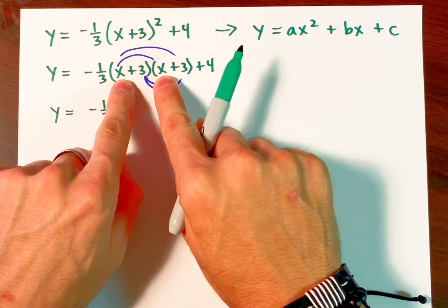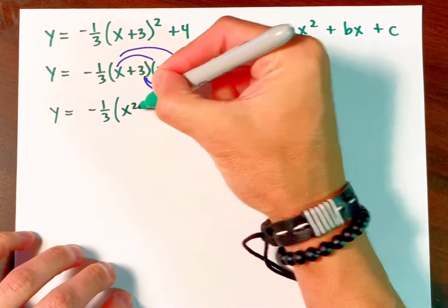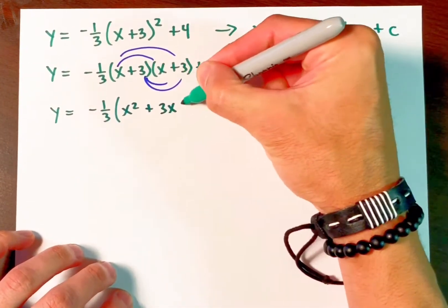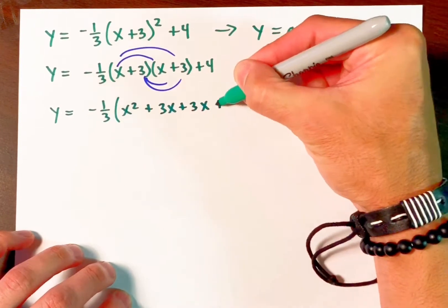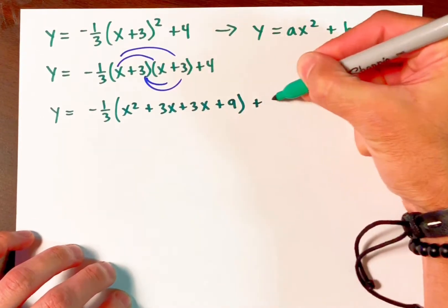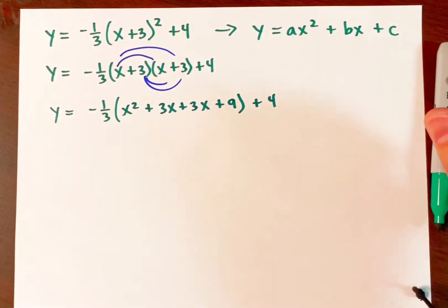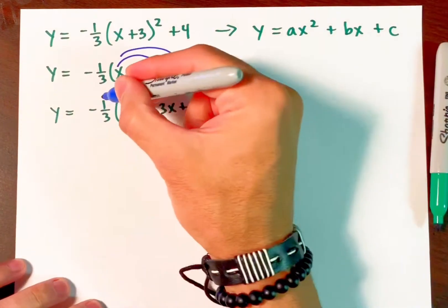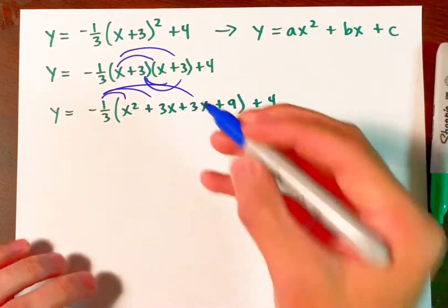So x times x squared. Carry out this distribution as I'm sure you've done in the past. Now I would continue to apply the distributive property.